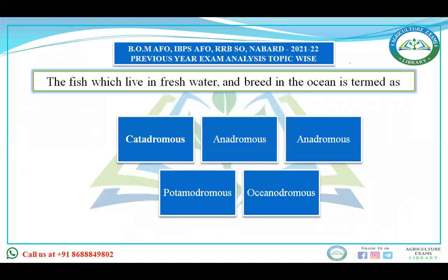First question: the fish which lives in fresh water and breeds in the ocean is termed as — catadromus, anadromus, potamodromus, or oceanodromus? The question is about the fish which lives in fresh water and breeds in the ocean. The right answer is catadromus.